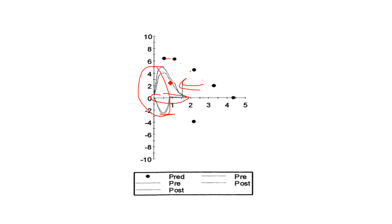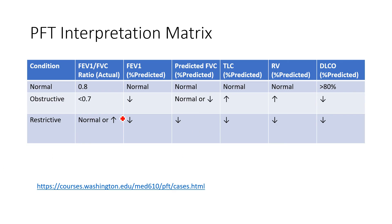Unlike patients with an obstructive defect, we don't see that expiratory scooping. They get whatever little air they can in, and it comes out pretty similarly — just not much moving in and out. Going back to our matrix, make sure you review this again. I hope these examples showed how to go through PFT interpretation systematically. Start with the actual FEV1/FVC ratio, then get to percent predicted values. I recommend going through more cases on this website for practice. That's PFT in a nutshell — thank you.